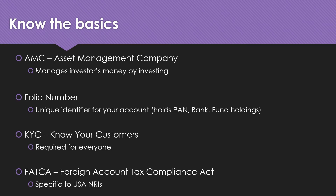Let's start with knowing the basics. First is AMC — Asset Management Company. These are the entities that float mutual funds for investors to purchase. At a basic level there are three types of funds available: equity funds, debt funds, and hybrid funds. In equity funds, money is only invested in equity-oriented instruments. In debt funds, money is invested in debt-oriented instruments. In a hybrid fund, money is invested in both equity and debt in certain ratios.